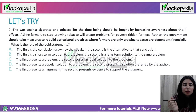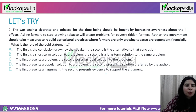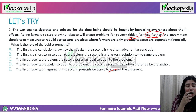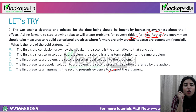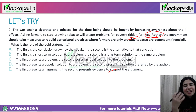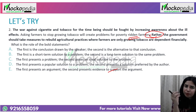Practice question 2: 'The war against cigarette and tobacco for the time being should be fought by increasing awareness about the ill effects.' They're giving a solution. Later: 'Asking farmers to stop growing tobacco will create problems for poverty-ridden farmers.' So that cannot be done. The word 'rather' signals a negative — don't stop farmers right now. 'The government should take measures to rebuild agricultural practices where farmers financially dependent on tobacco can be sorted.' So first gives one solution; second says what cannot be done immediately and how to address it strategically.